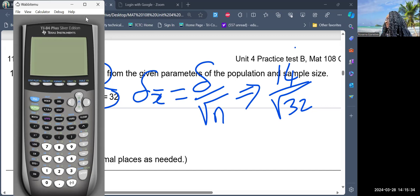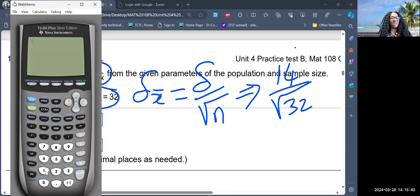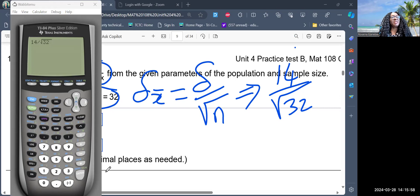So really they don't need to calculate anything. I'm going to take the standard error. I'm just going to type in the number that I have, and that is 14 divided by square root. So I get the square root of the sample size, which is 32.